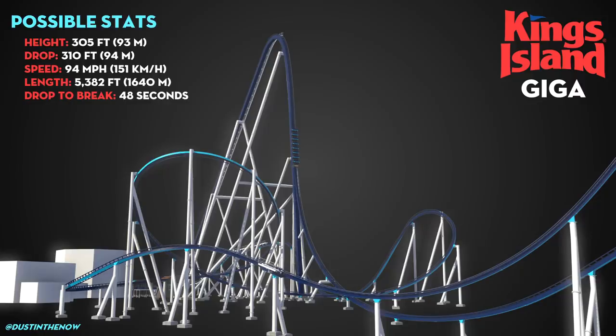He made a prediction based off of angles, measurements, and all that. I mean, he really dove in deep. At 305 feet tall, so it's probably going to be anywhere between 280 to 305 feet tall in terms of height, with a drop definitely between 300 feet and 310 feet is our prediction, with speeds around 90 to 94 miles per hour, perhaps anywhere between 135 to 151 kilometers an hour, and a track length of 5,382 feet long and a drop to brake time of 48 seconds.